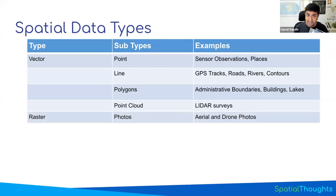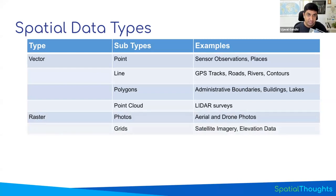Then we have the category of raster datasets. The first one being photographs — if you have a camera or a sensor on a drone or an aerial platform and you're taking pictures of the Earth, when you process and reference them on the surface of the Earth, they turn into a raster dataset that you can use for visualization and analysis. You also have gridded datasets — a grid of pixels — where you can represent different continuous observations, such as elevation datasets, population datasets, and so on, all represented as a grid of pixels.